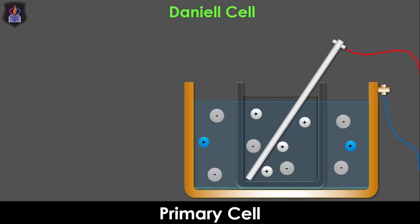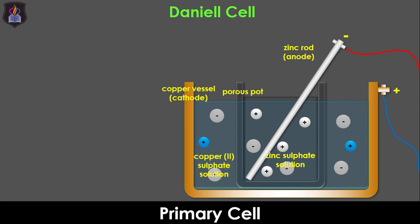The Daniel cell is made up of two half cells, namely the zinc half cell and the copper half cell. The anode is made up of a zinc rod immersed in zinc sulfate solution in a porous pot. While the cathode is a copper vessel containing copper 2 sulfate, the porous pot allows the movement of ions in and out of the zinc and copper 2 ions electrolytes.